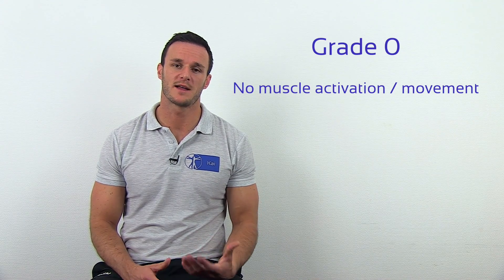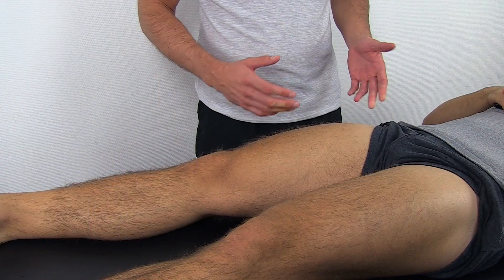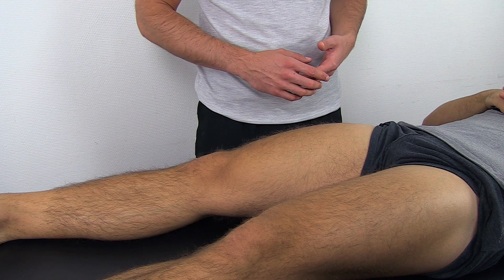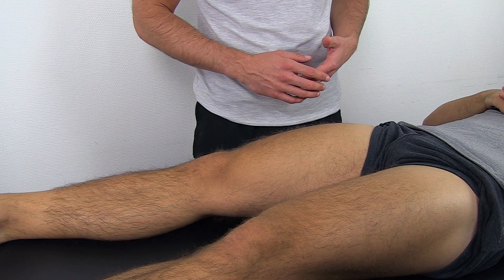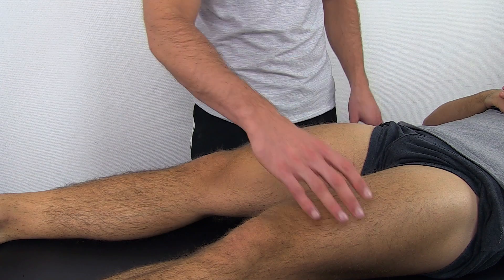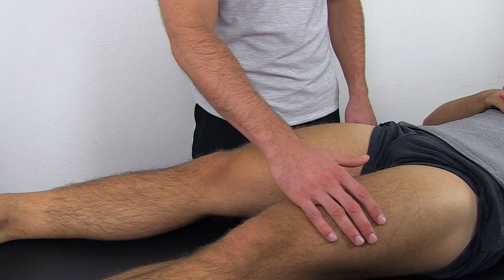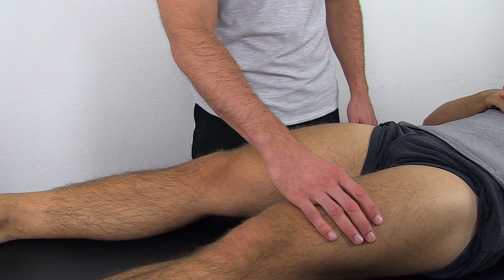The levels are as follows. Grade 0: the patient cannot activate the muscle, so no movement is observed. For grade 0, ask the patient to contract his quadriceps — he can do this by pushing the back of his knee into the bench. For grade 0, you will not see or feel a flicker or trace of contraction or movement.